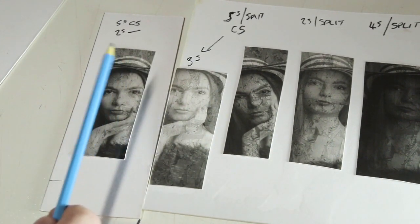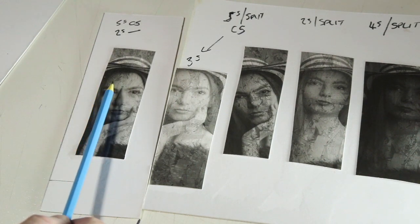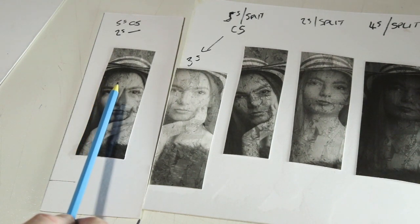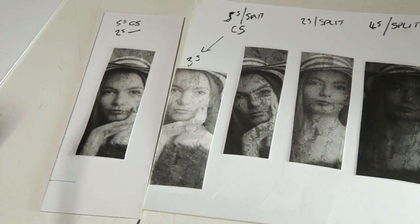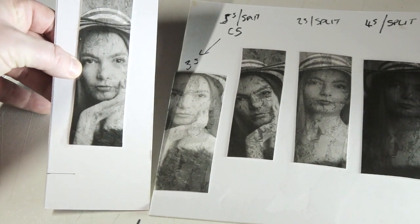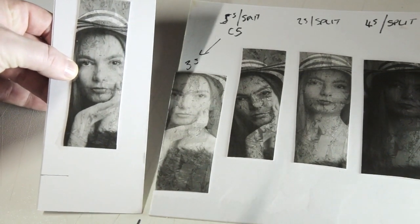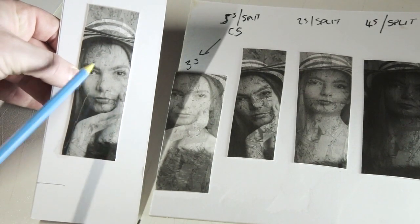So none of these really cut the mustard for me. But this one did. This one is five seconds with the contrast five filter with the model and then two seconds with no filters with the texture. So this is the one that I found was the best one to make into a print. So I'll just show you, I want to make a print now and I'll show you what I was doing with the negatives to get this test print.